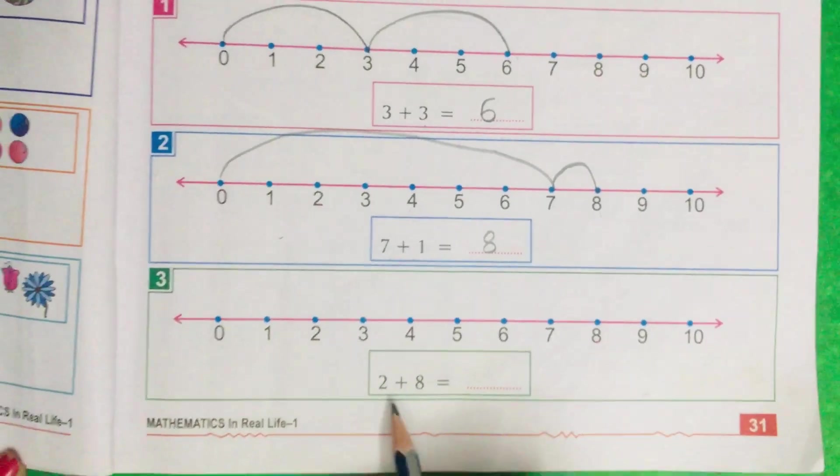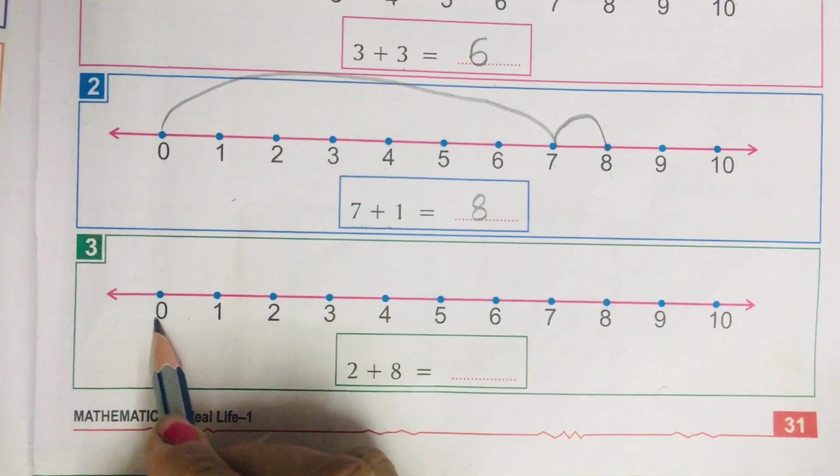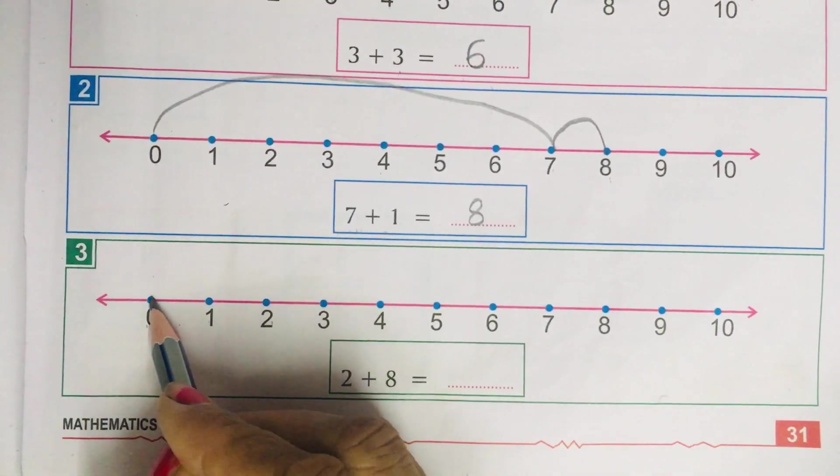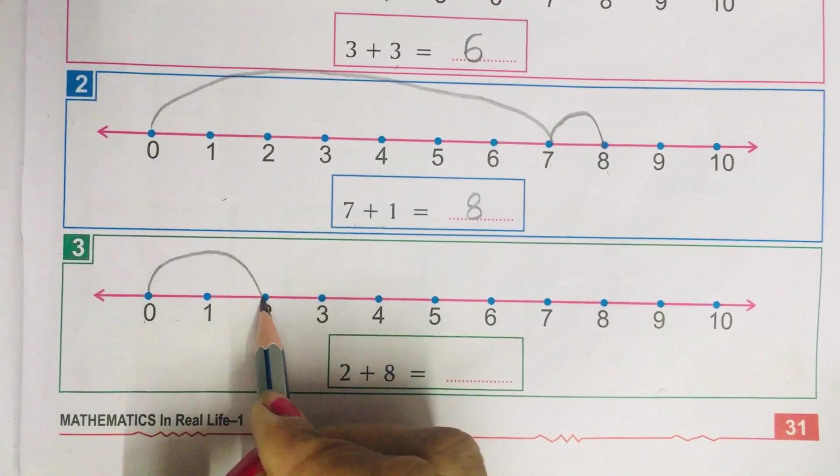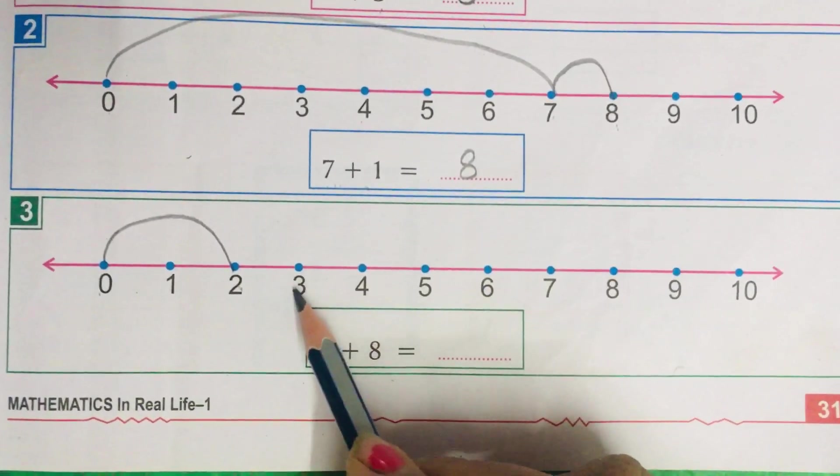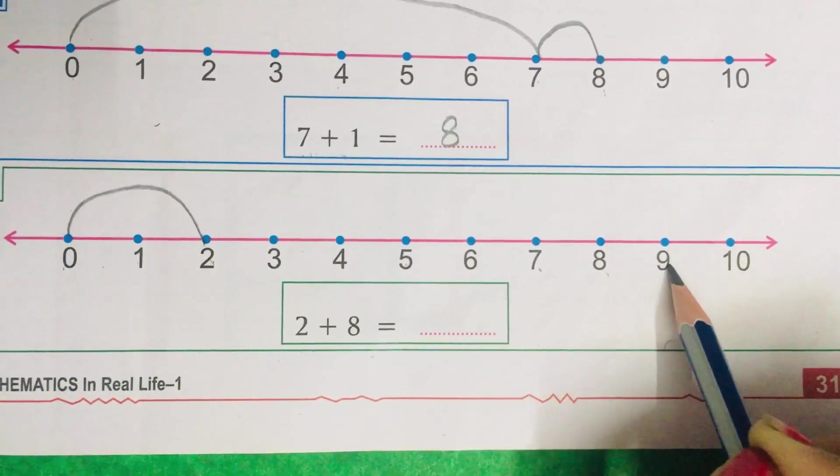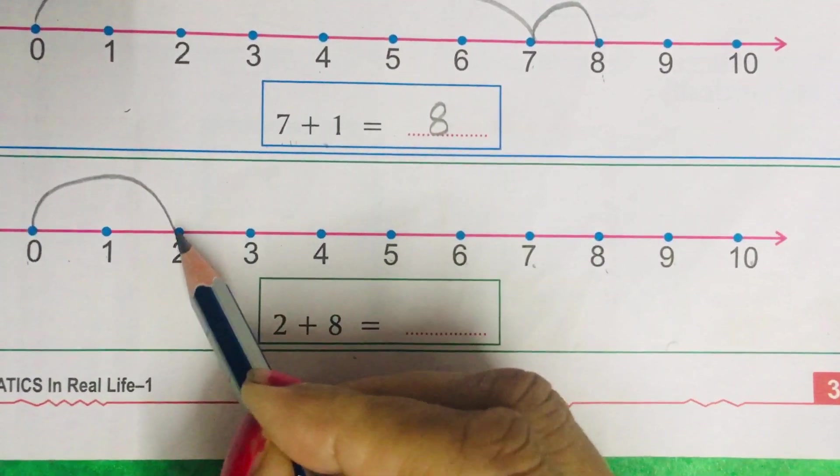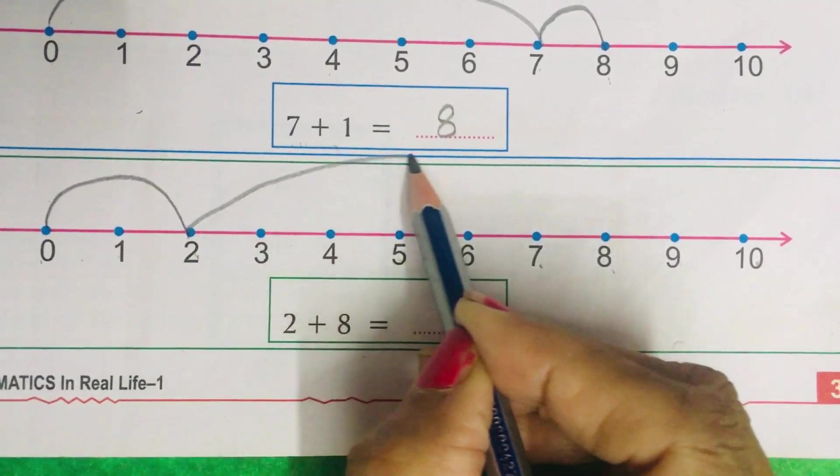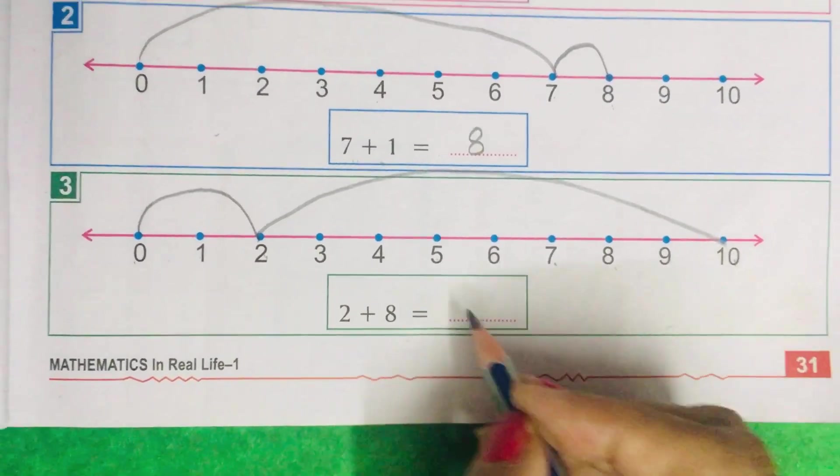See, sum number 3. 2 is written. So, we will count 0, 1, 2. Draw a line like this till 2. Then, 8 is written. Now, from 2 count 8: 1, 2, 3, 4, 5, 6, 7, 8. So, what we will do? We will jump like this till 10. And our answer will come 10.